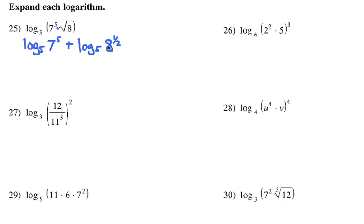Then we're going to use the logarithm of powers, so that 5 gets out in front. Now it's 5 log 5 of 7 plus 1 half log base 5 of 8. And instead of 1 half, I can go ahead and put it in the denominator there. Now it looks way more complicated than it started, but the idea is sometimes we'll need to break these expressions apart and expand them. That's the idea here, we're learning those properties of logarithms. Pause the video and see if you can try these other 5.